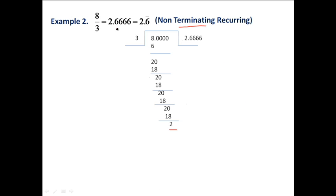This shows decimal representation of rational numbers can also be non-terminating recurring. This repeated repetition of 6 can be simply written as 6 with a bar sign over it. This is how we represent non-terminating recurring decimal numbers.